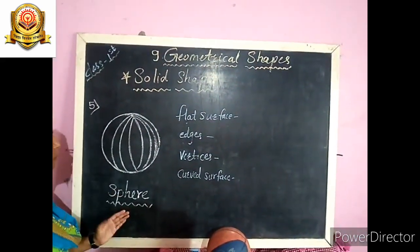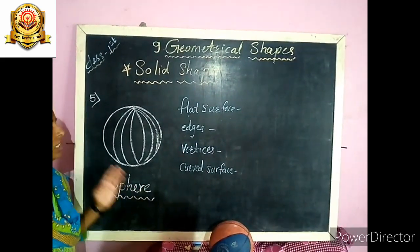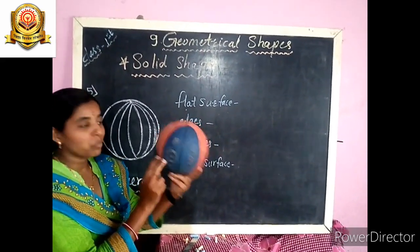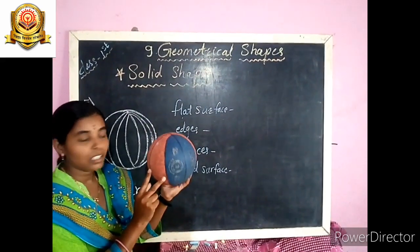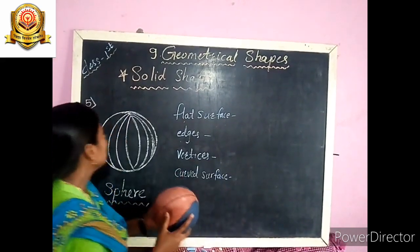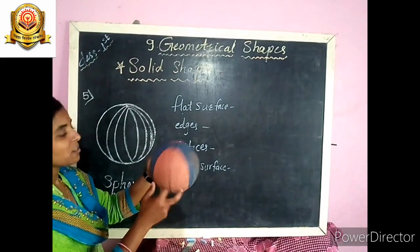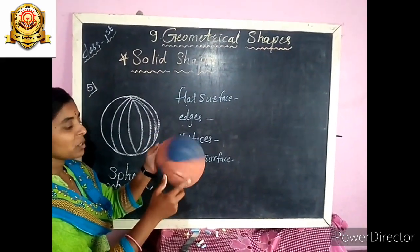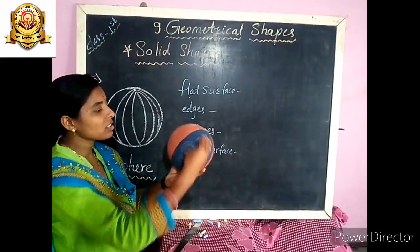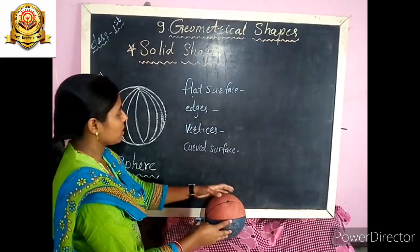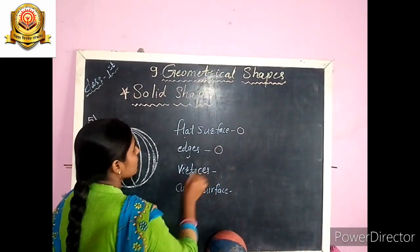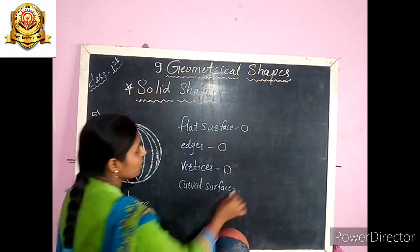Our 5th shape is sphere — S-P-H-E-R-E. Look at this — what is this? This is a ball, and the shape of this ball is sphere. Sphere has no flat surfaces, no edges, and no vertices — sphere has only 1 curved surface. So: sphere has 0 flat surfaces, 0 edges, 0 vertices, and 1 curved surface.